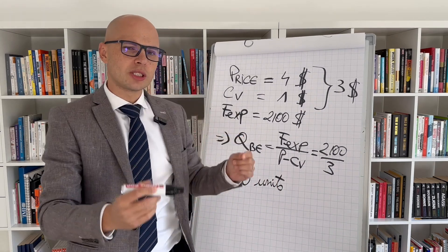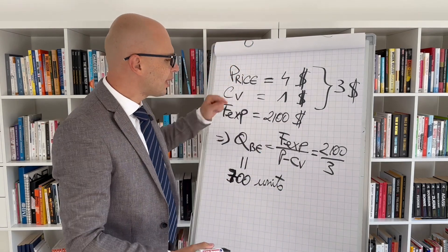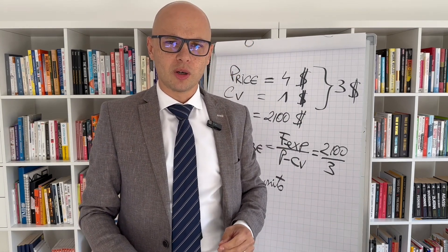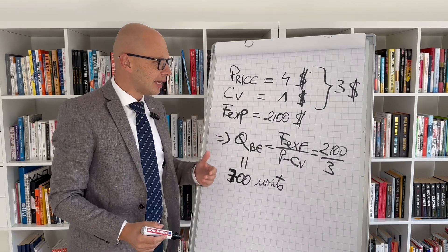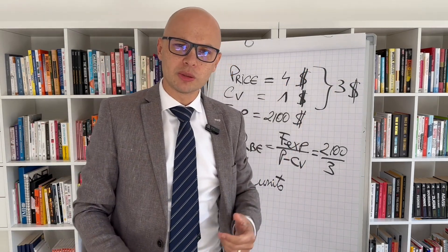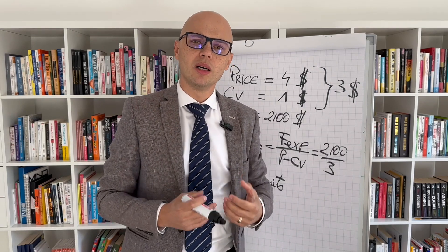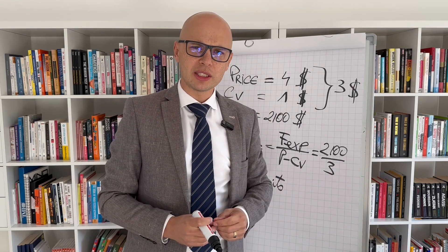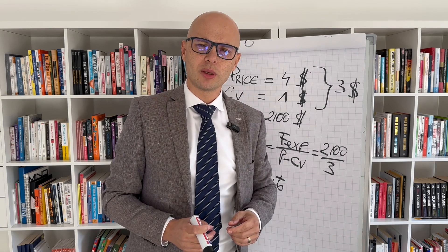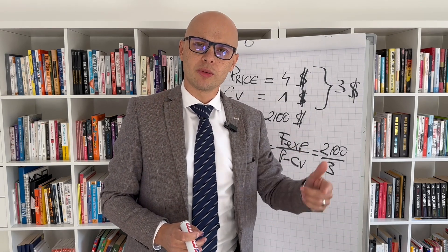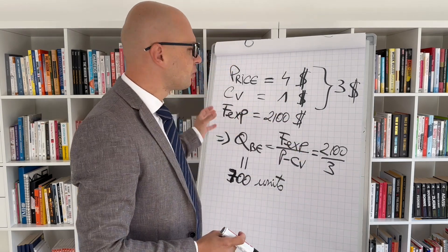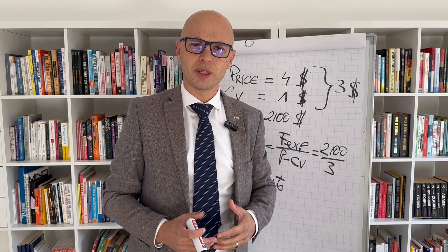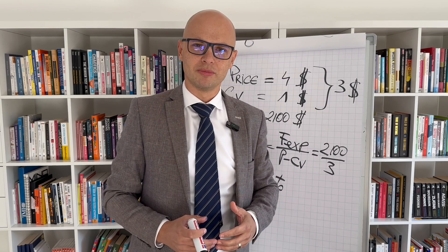That gives us 700 units. It means I need to sell 700 units to reach breakeven. Until I reach breakeven, I cannot talk about profit. If I'm selling 500 units, that's 500 times $3 contribution margin, which is below the targeted fixed expenses. In the next episode, we'll talk about the next step — how we can reach profit starting from breakeven. Looking forward to hearing your comments and feedback. Hope this was useful — take care!